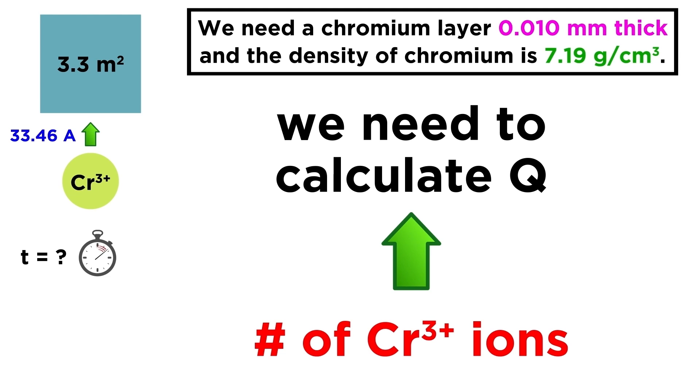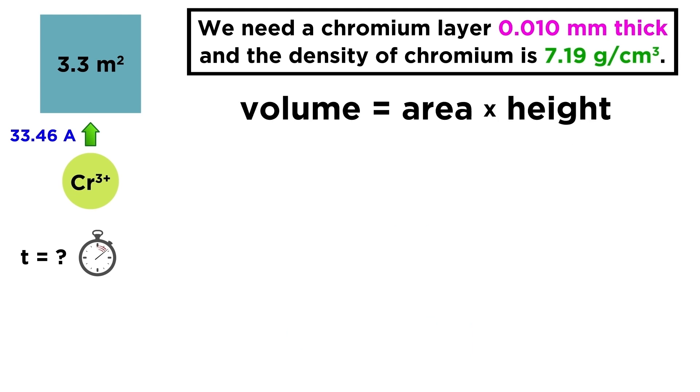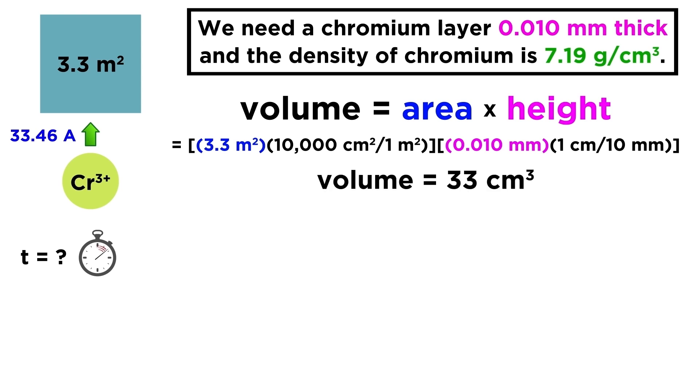So first let's figure out the volume of this chromium layer. That will be the area of the layer times the height of the layer. Let's convert both of them into centimeters since that's what the density of chromium is given in, and multiplying height times area gives us 33 cubic centimeters. 33 cubic centimeters of chromium atoms are needed to form this layer. Let's then use the density of chromium to figure out the mass of chromium that volume represents. 33 cubic centimeters times 7.19 grams per cubic centimeter gives us 237 grams of chromium.